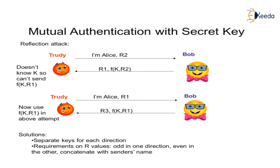A reflection-type attack can occur in mutual authentication with a secret key. If a third party, say Trudy, pretends to be Alice, Trudy sends a message R1 to Bob. Bob, unaware the message is from Trudy, replies back with the same message and the secret key shared with Alice. In this manner Trudy gets the secret key and the message meant for Bob, and thus gains access to all confidential information.